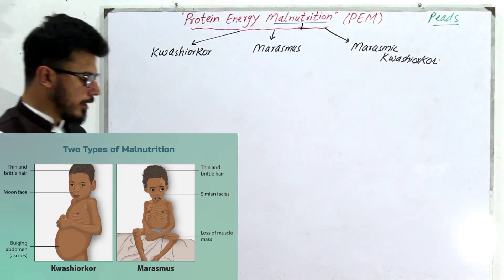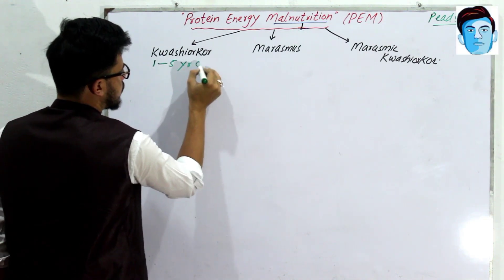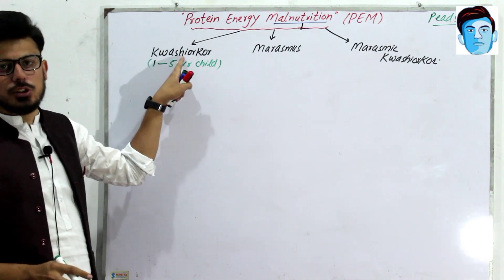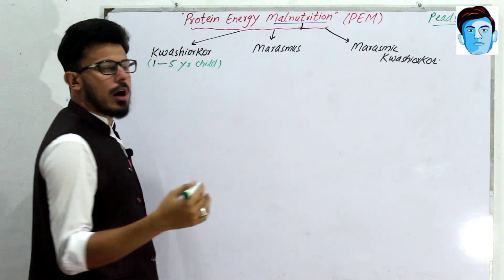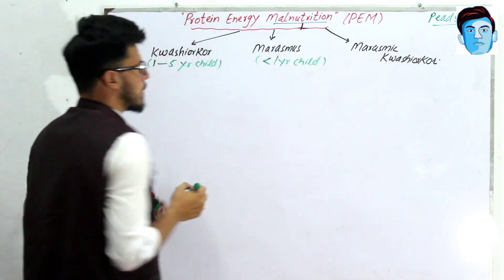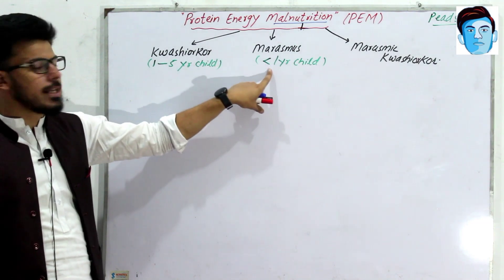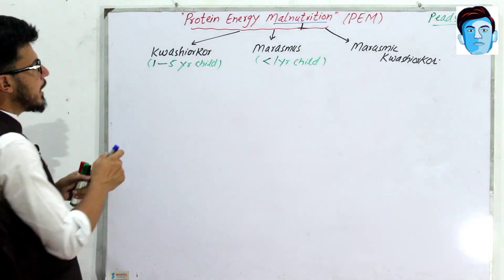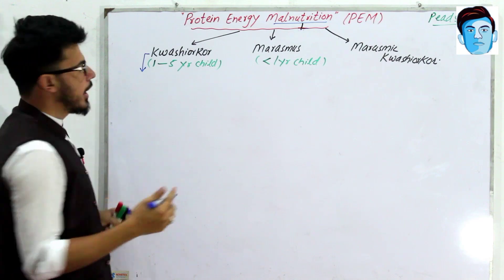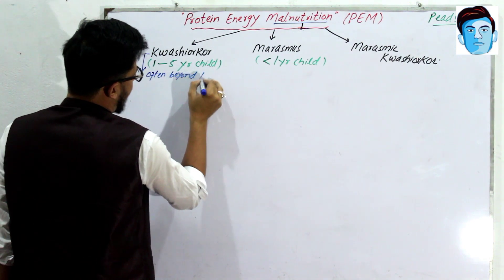Kwashiorkor is more common in one to five year old children, and more often occurs beyond 18 months of age. Marasmus is more common in infants less than one year of age. So the age distinction is important: kwashiorkor at one to five years, marasmus at less than one year.